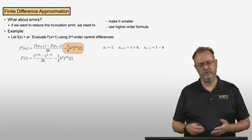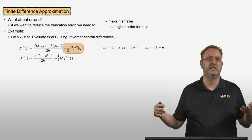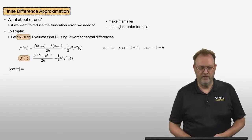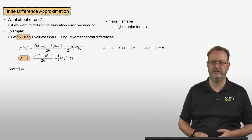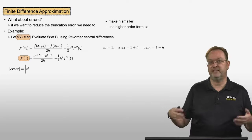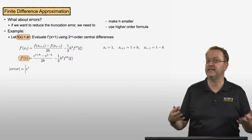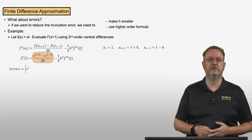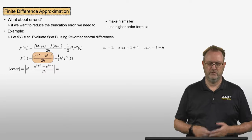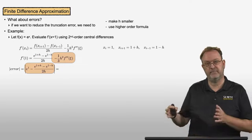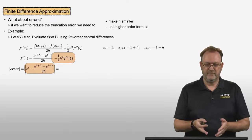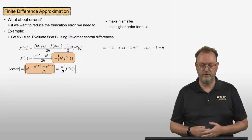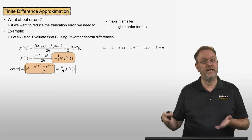We also have the truncation error, which is negative (1/3)h² times f triple prime at some unknown location xi. Now let me calculate the absolute value of the error. The absolute value of the error is the true solution — the analytical derivative of e^x at x = 1, which is e^1 — minus my numerical solution using second-order central differences. This error has the form |h²/3 × f triple prime(xi)|.